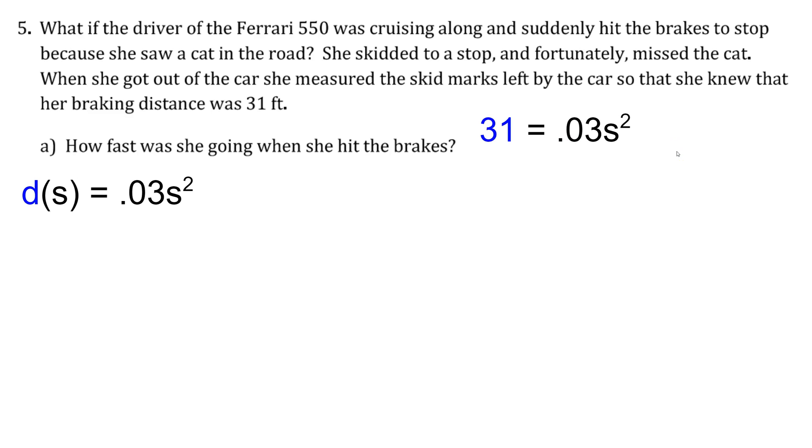So instead of substituting into an equation and just doing a calculation, here we have to solve an equation. So first we'll divide both sides by 0.03, leaving us with 1033.3 repeating equals s squared, and then we'll square root both sides of the equation, giving us our answer of 32.15 miles per hour. That's how fast she was going when she hit the brakes to save the life of that dear sweet cat.